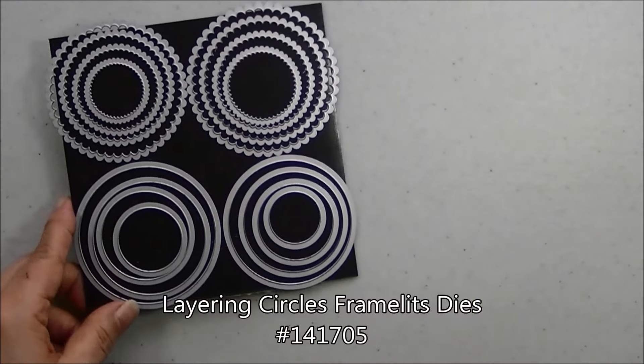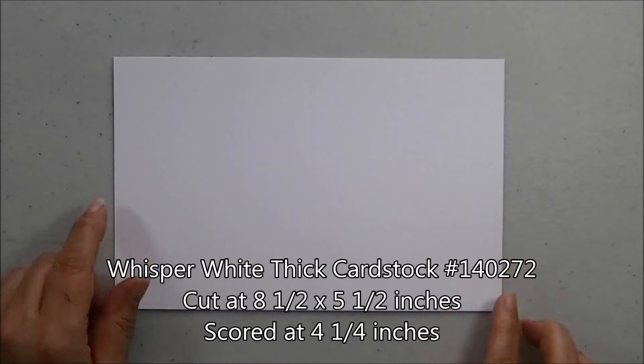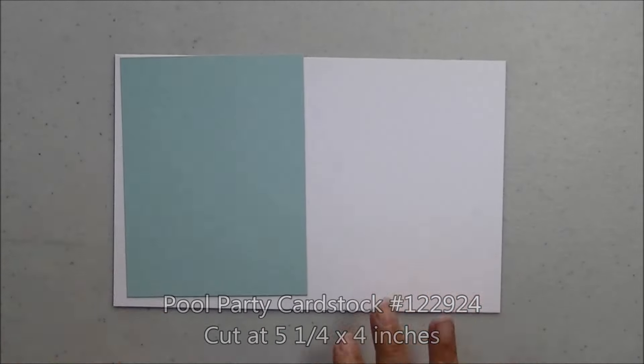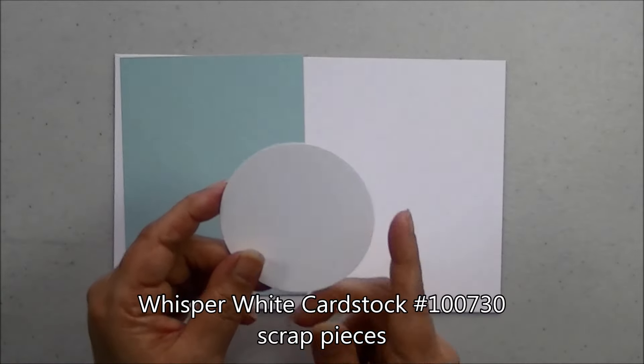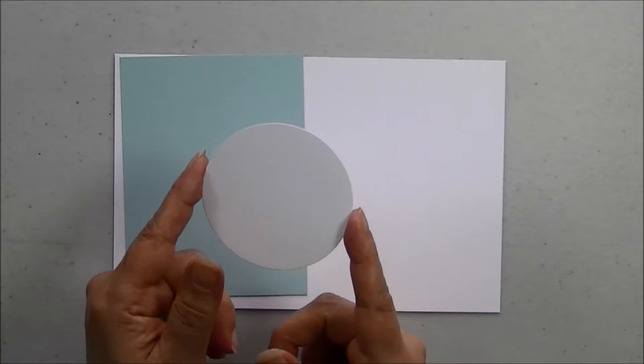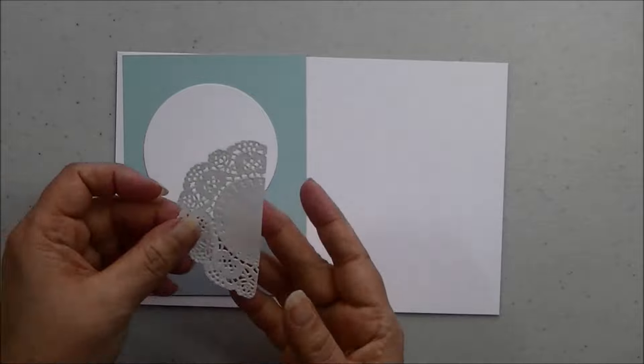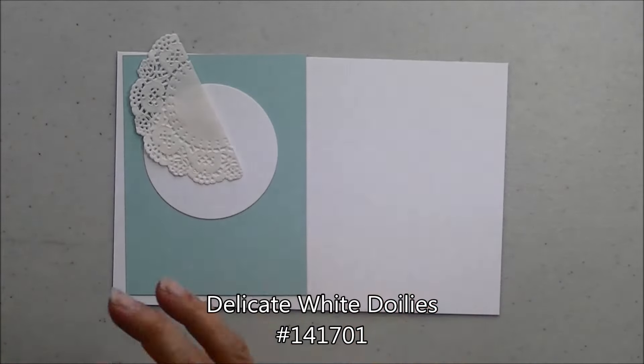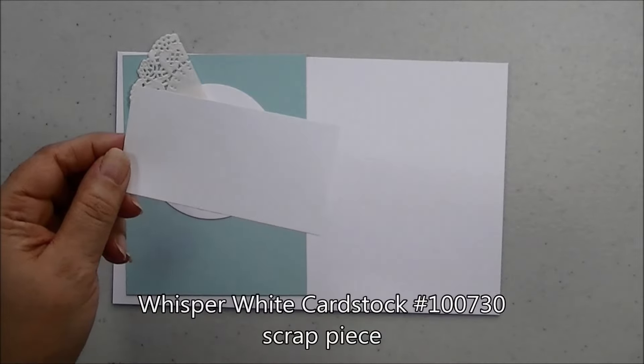We'll also be using the Layering Circles dies as well as the Bitty Butterfly Punch. And for our paper I have a piece of the Whisper White Thick cut at 8.5 by 5.5 and scored at 4.25. I have a piece of the Pool Party cut at 4 by 5.25. I have a circle. I've already went and cut it using the Layering Circles die in the Whisper White. I have half of a doily.